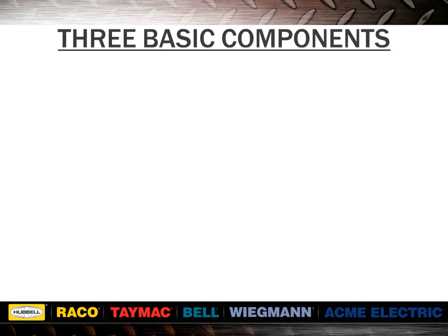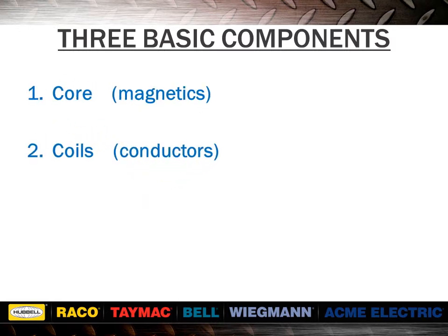Let's discuss the three basic components of a transformer. The transformer's core and coil are the primary components for voltage transformation. The insulation, typically comprised of mylar, nomex, craft paper, varnish, or other materials, is placed between the turns of wire to prevent shorting to one another or to ground. Since a transformer has no moving parts, it will typically have a life expectancy of 20 to 25 years. Acme transformers carry a 10-year warranty against defects in material and workmanship.